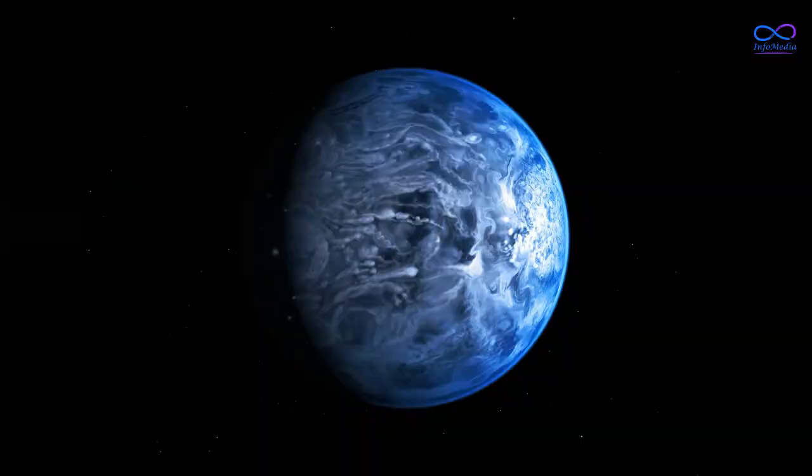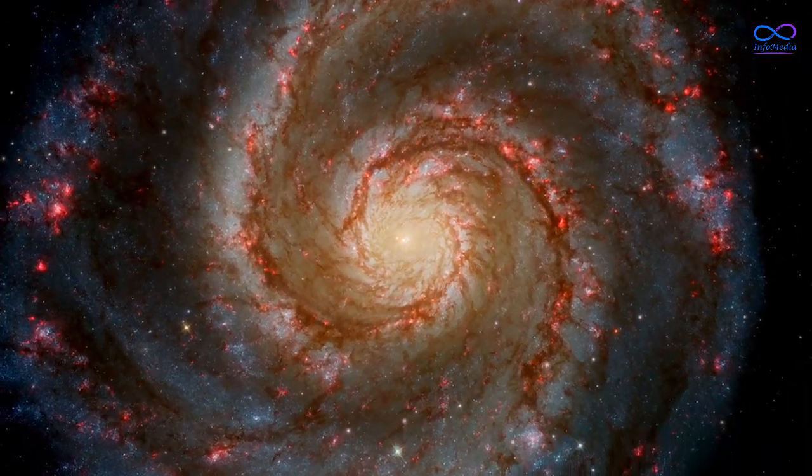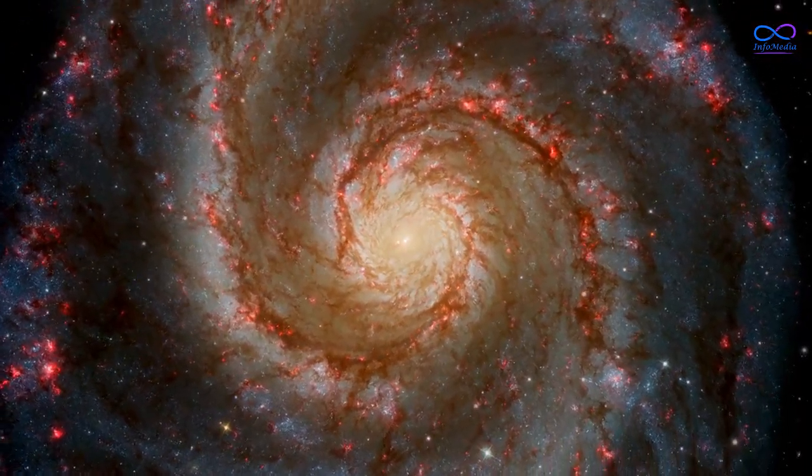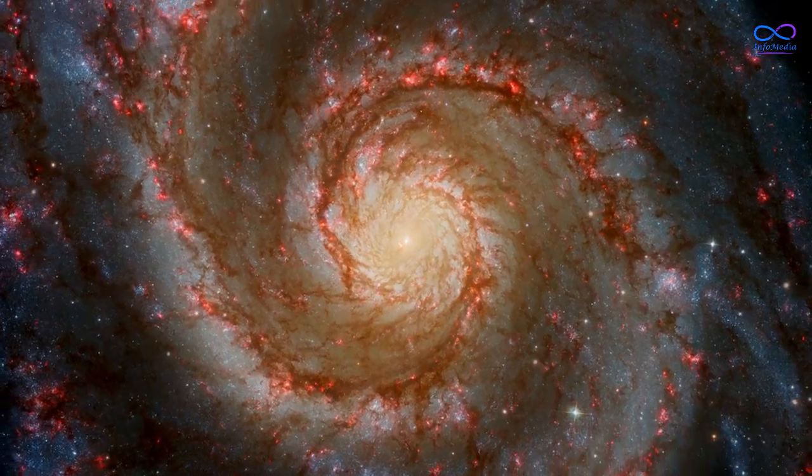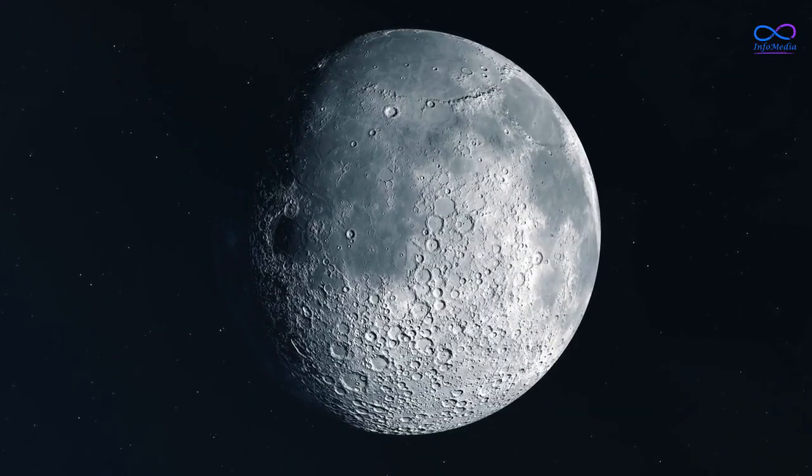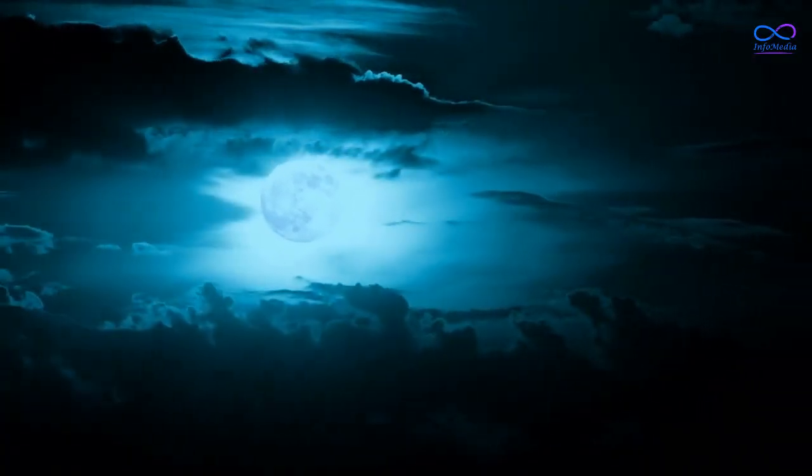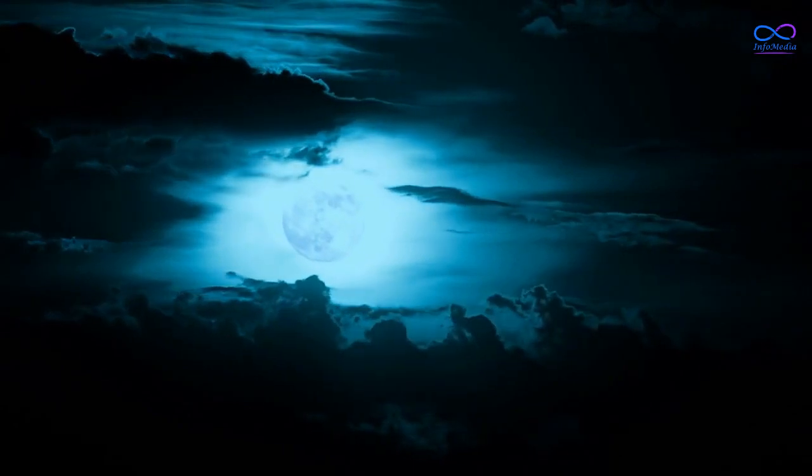Other features of HD 189733 b. Apart from its atmosphere and climate, HD 189733 b has some other interesting features that make it a unique planet in our galaxy. One such feature is the presence of a large exomoon around the planet. This exomoon, known as HD 189733 bb,